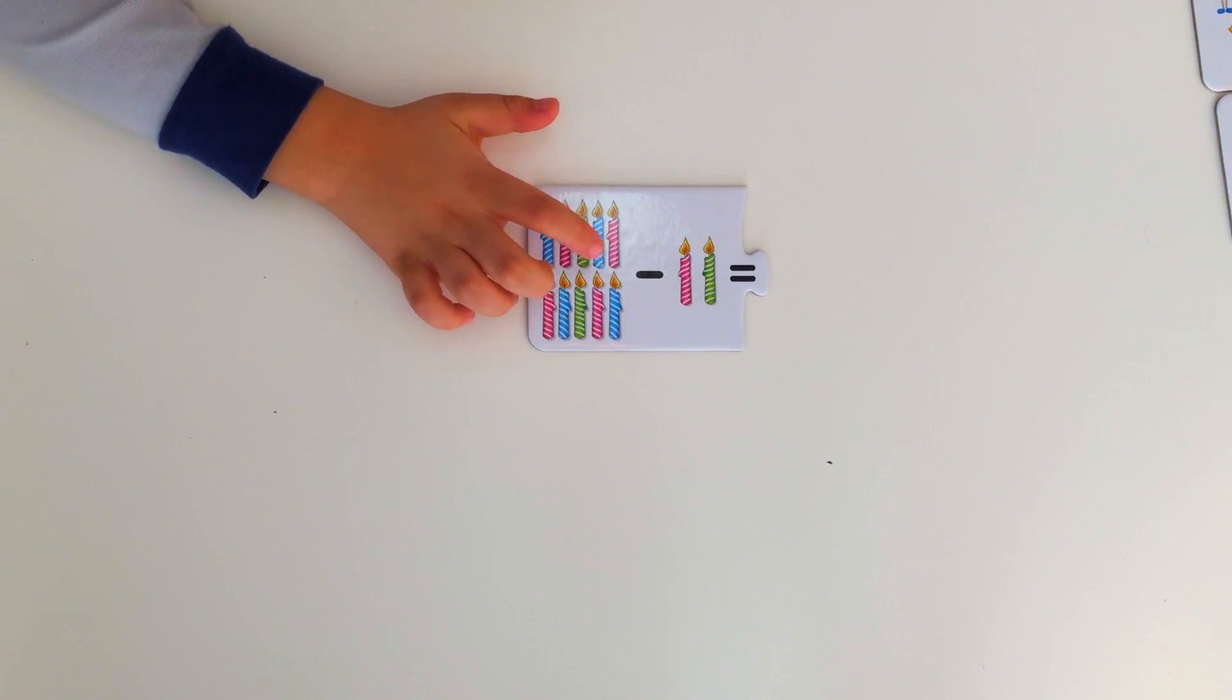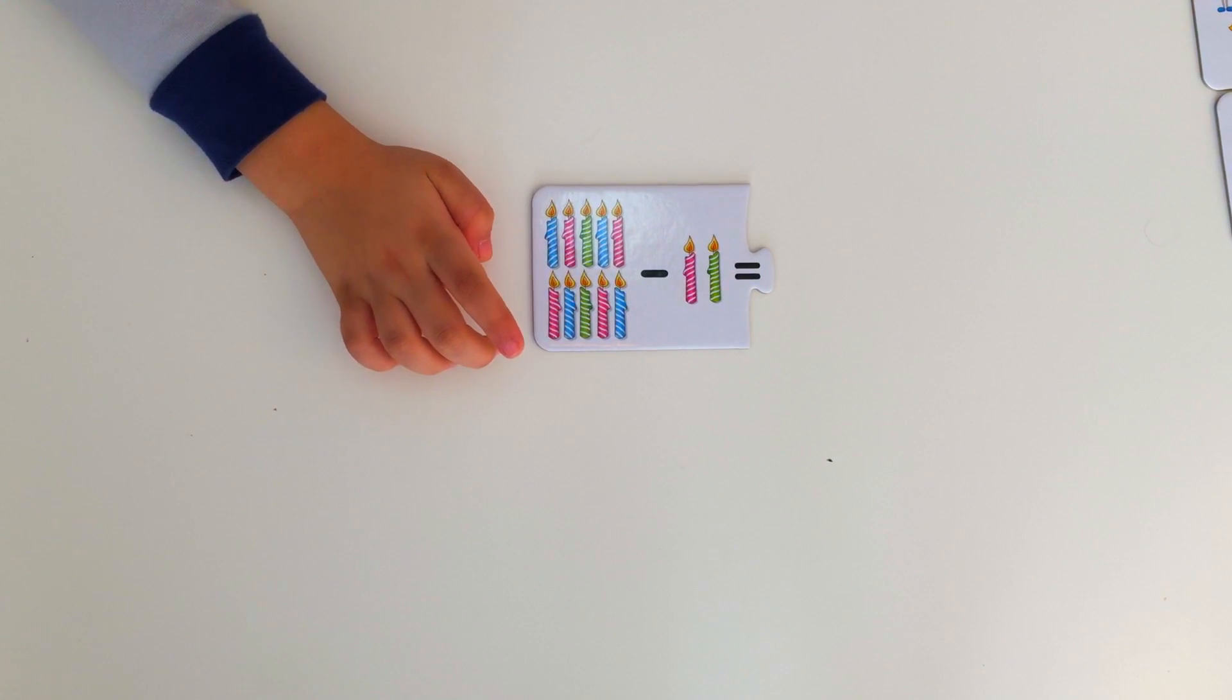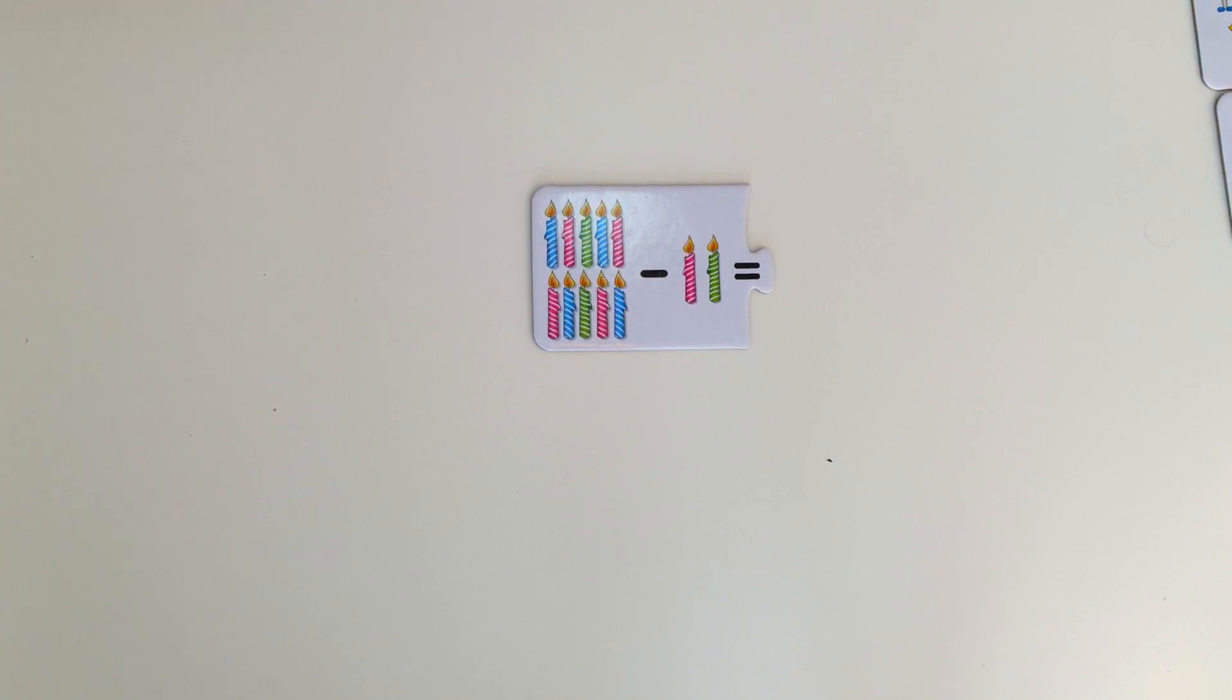One, two, three, four, five, six, seven, eight, nine, ten. Ten candles minus two candles is eight candles.